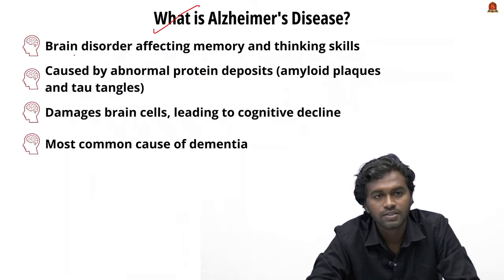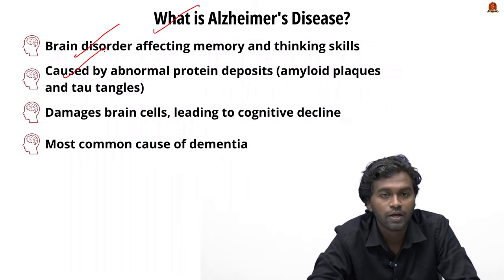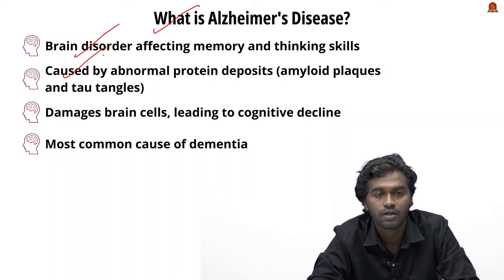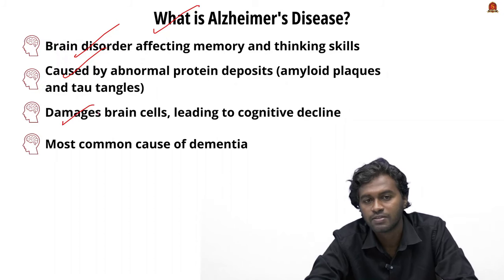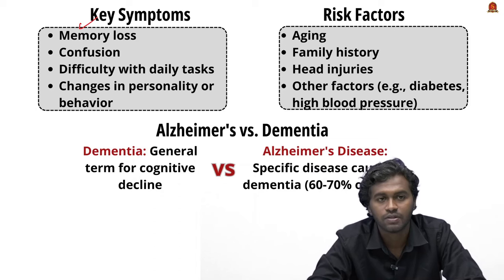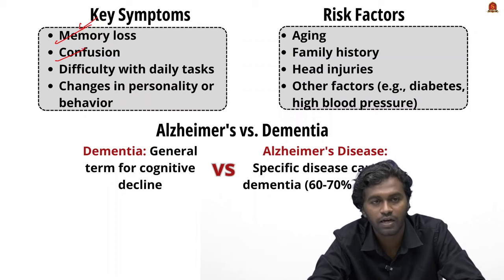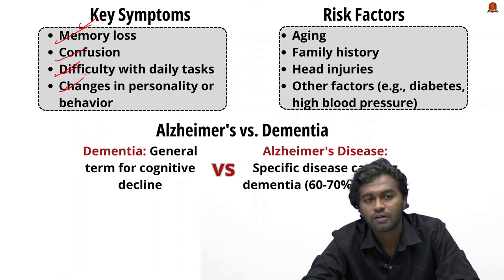What is Alzheimer's? Alzheimer's is a brain disorder affecting memory and thinking skills. It is caused by abnormal deposition of proteins such as amyloid plaques and tau tangles in the brain, which damage brain cells and result in cognitive decline. Alzheimer's is one of the common causes of dementia. Key symptoms include memory loss, confusion, difficulty with daily tasks, and changes in personality or behavior.